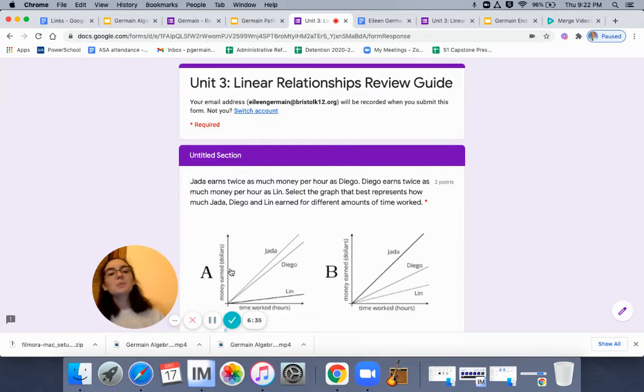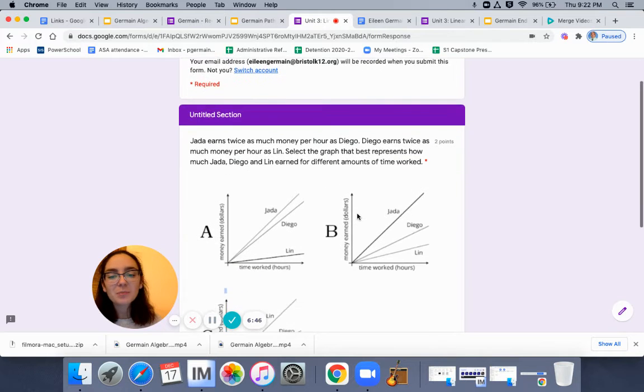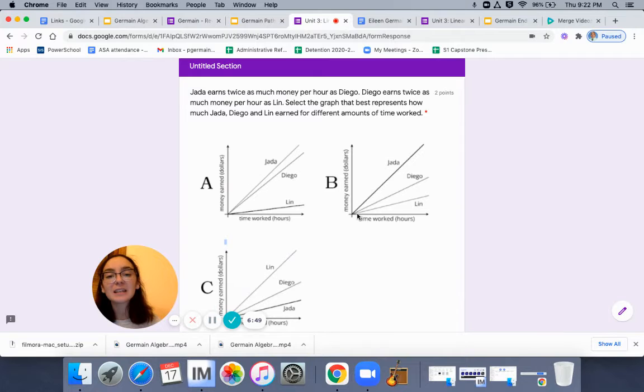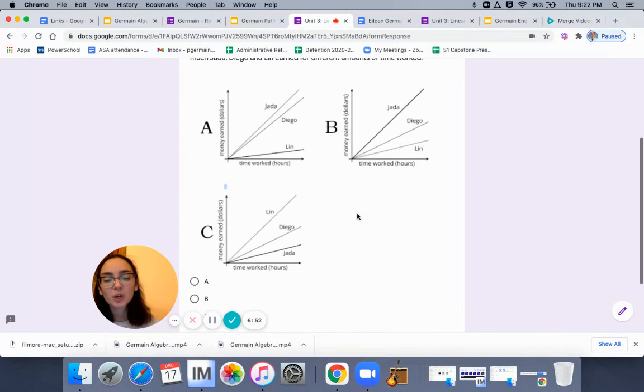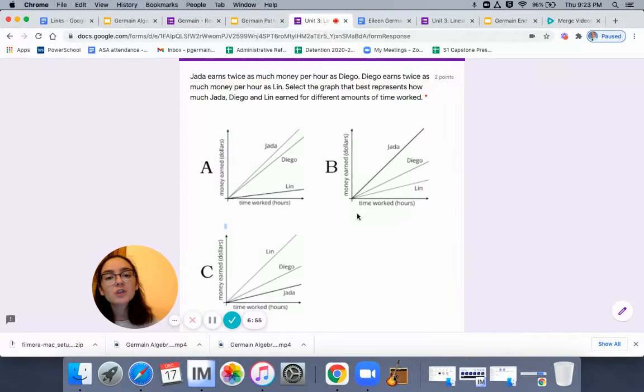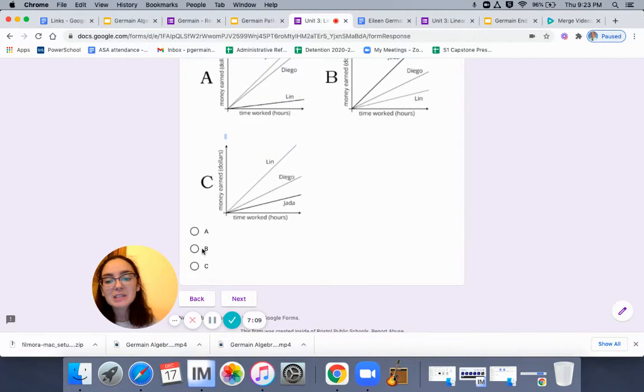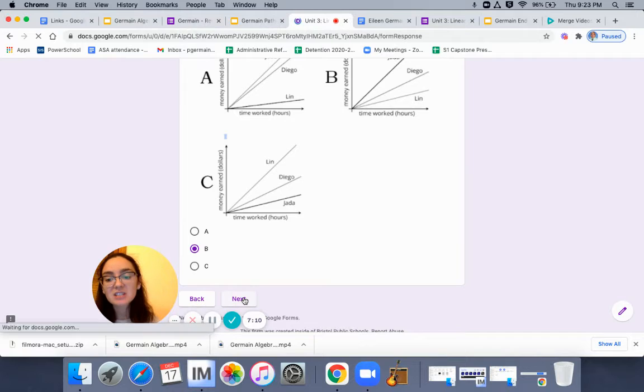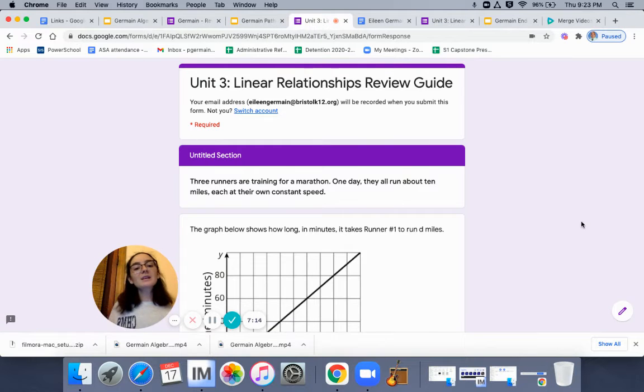Now, Jada earns twice as much money per hour as Diego. Diego earns twice as much money per hour as Lynn. Select the graph that best represents how much Jada, Diego, and Lynn earned at different amounts of time worked. So I'm going to read it again. Jada earned twice as much as Diego. Diego earned twice as much as Lynn. So you're going to tell me which one of these has the description of these in the right order and steepness. Which one is right? A, B, C, or D? I'm just clicking anyone, not selecting the right answer.